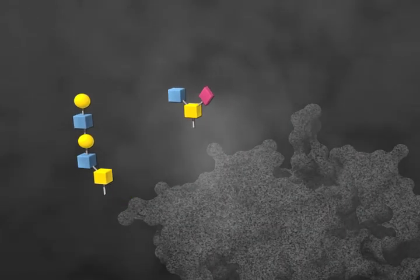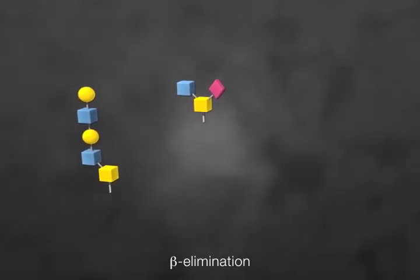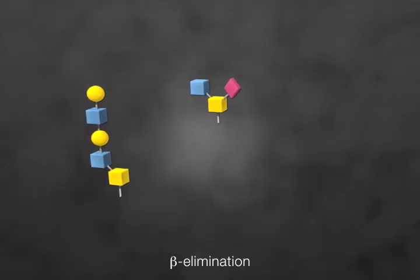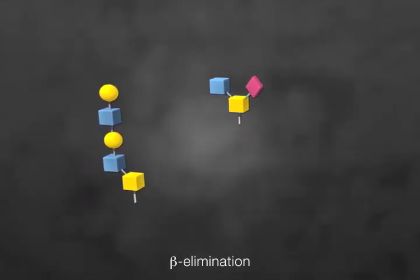Alkaline chemical treatments, like beta-elimination, release O-glycans as a block for further analysis. Note that the protein is destroyed in the process.